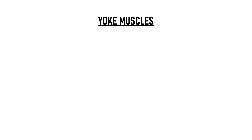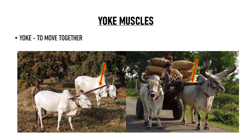Before we discuss secondary deviation, we must understand the concept of yoke muscles. Yoke means to move together. Yoke is a wooden thing that is attached to the necks of two animals so that they are connected — when one animal moves, the other moves as well, and they pull the cart together, working like a pair. The same way, the muscles of one eye are yoked with the muscles of the opposite eye.